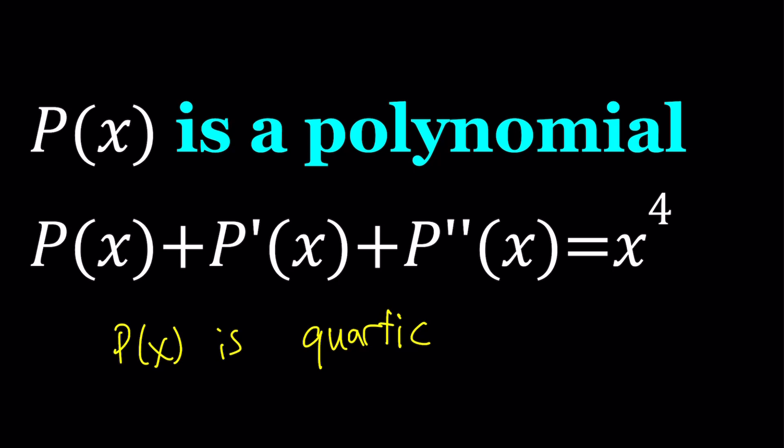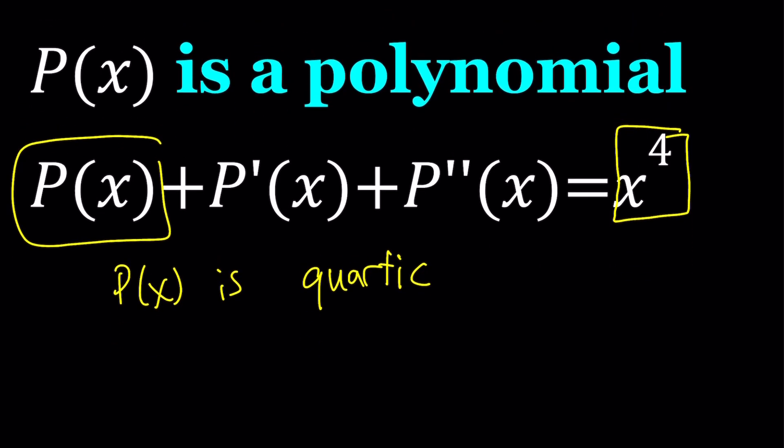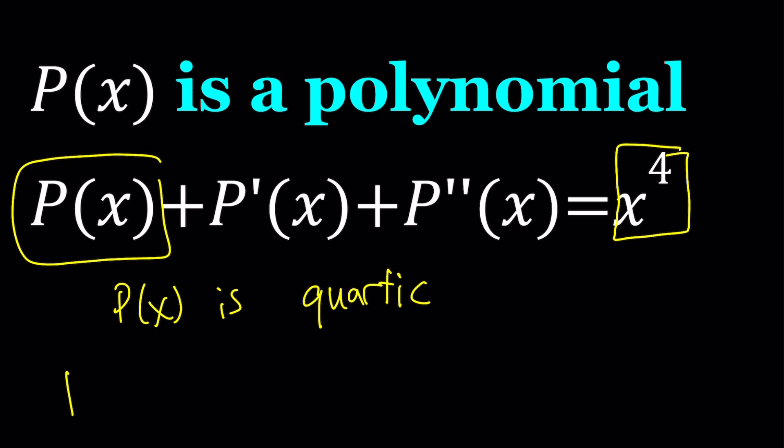So since P of X is quartic, it has to be, right? It can't be quintic, it can't be cubic. We're just going to write it in the general quartic form. But one thing that's going to help us is the sum is X to the fourth. And the only X to the fourth is going to be coming from P of X because as you differentiate, it's going to lose the fourth power and then the third power. So P of X must start with one X to the fourth. In other words, the leading coefficient is one, which is nice because we don't have to solve for that variable.